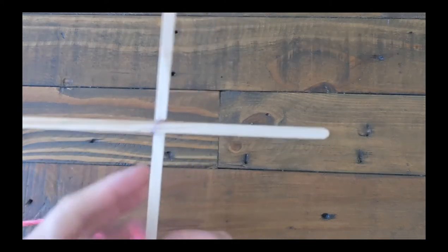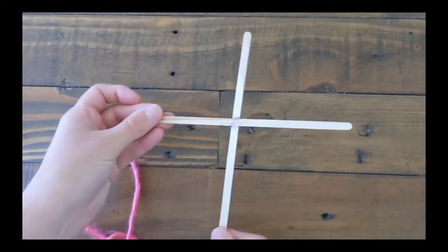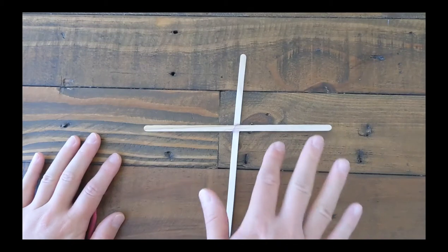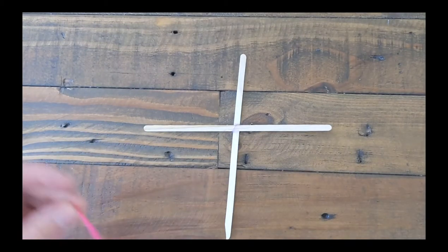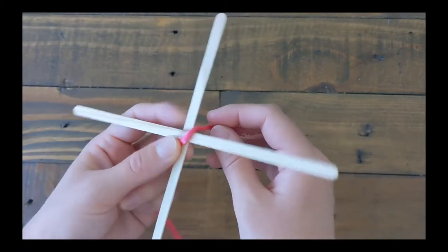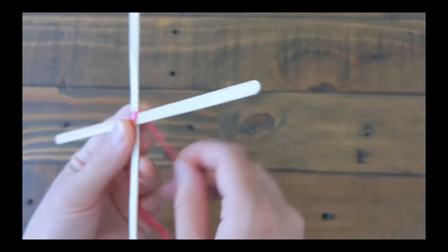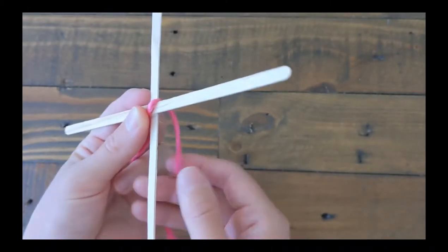Okay, so to start, we're going to take our yarn and we're going to want to make an X in the center of our sticks. And we'll want to keep our sticks like a T for this part. So since I'm going to start with the pink end, I'm going to first go like this.